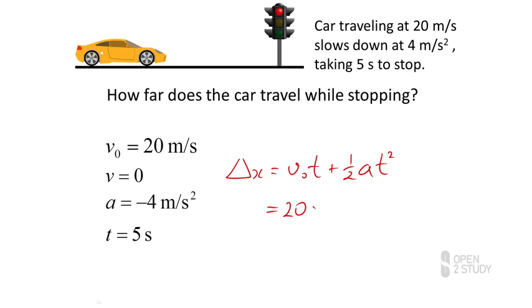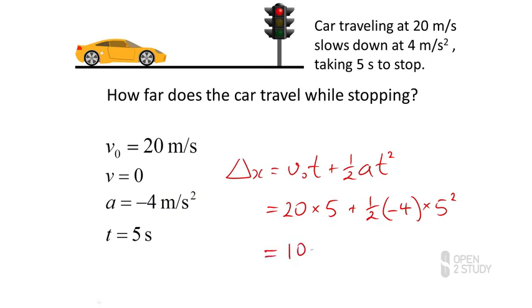This is 20 as our initial velocity, 5 seconds is how long we calculated it took, plus one-half. Remember that our acceleration here is minus 4, times our time squared. And 20 times 5 is 100.